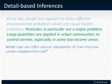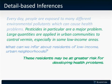Notice towards the bottom that we mention people who live in urban communities and in low-income areas. What is true about them? Well, they get more pesticides — a kind of environmental pollutant which can cause health problems. So people who live in these areas may be at greater risk for developing some health problems. That's a valid inference we can draw from that detail.